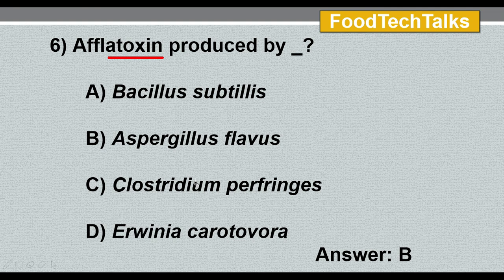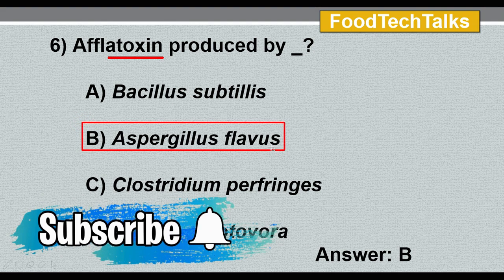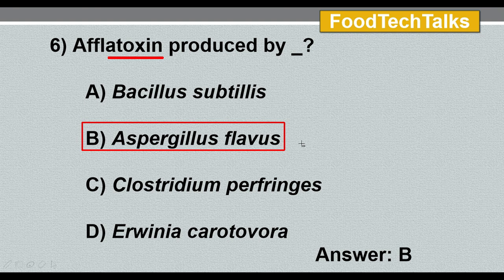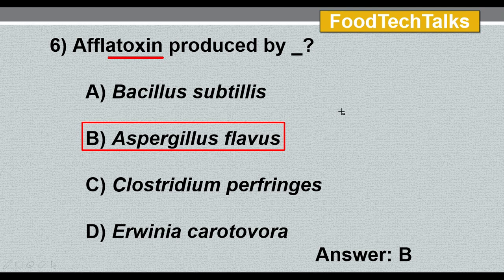Sixth question: aflatoxin is produced by which organism? Options: A) Bacillus subtilis, B) Aspergillus flavus, C) Clostridium perfringens, D) Aeromonas hydrophila. The answer is option B, Aspergillus flavus. Aflatoxin is commonly produced by Aspergillus flavus and Aspergillus parasiticus. Aflatoxin is classified into two types — B1 and G1. Under UV light, B1 appears blue and G1 appears green. It is toxigenic, mutagenic, and carcinogenic; B1 is more toxic than G1. Aflatoxin is commonly found in peanuts, corn, spices, etc.